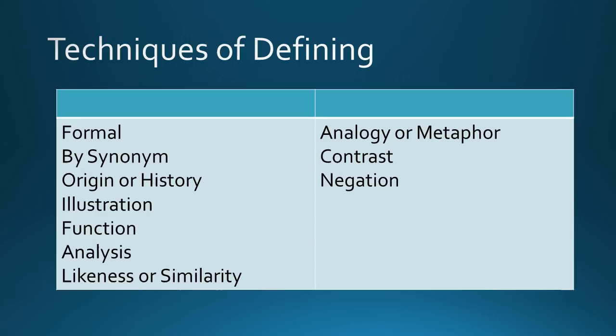Last but not the least, by negation. This means stating what the term is not. It is like giving the reverse of what it ought to be. For example, wild rice, a native American delicacy, is not rice at all, but the seed of a tall aquatic grass.